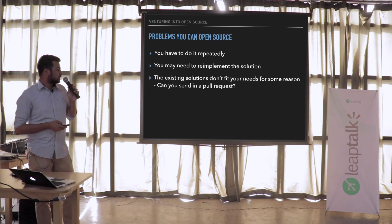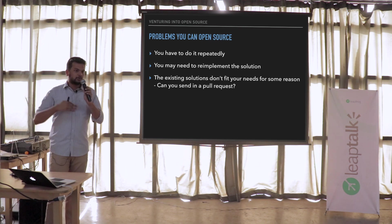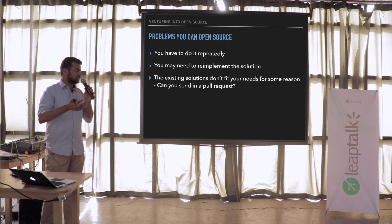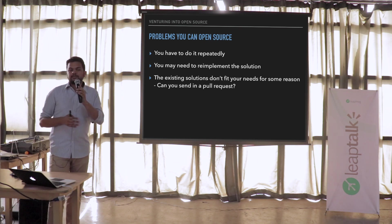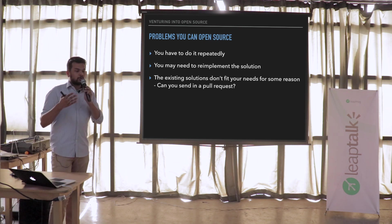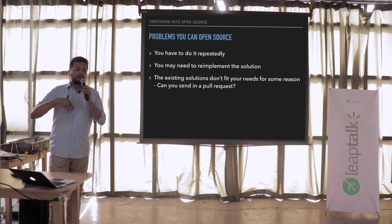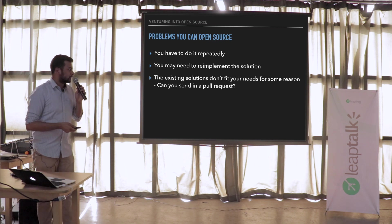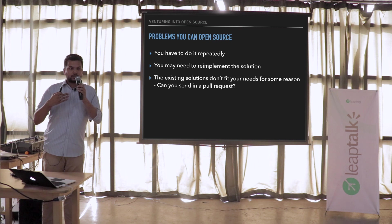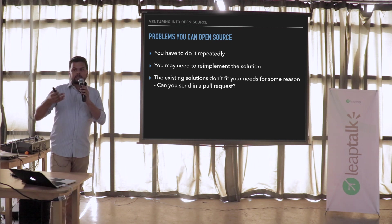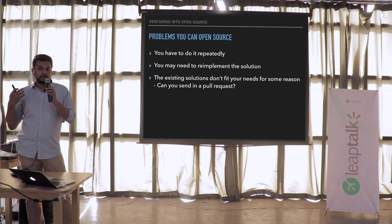The next thing is when existing solutions don't fit your needs. This doesn't immediately mean you jump to writing your own solution. Maybe you can improve on what's already there, because we don't want to solve problems that have already been solved. People who've experienced the problem have solved it in some way — that's a great starting point to build upon. Maybe we can send a pull request, add some features, raise an issue. Let's just not discard libraries because they don't have a certain feature; maybe we can add it to them.